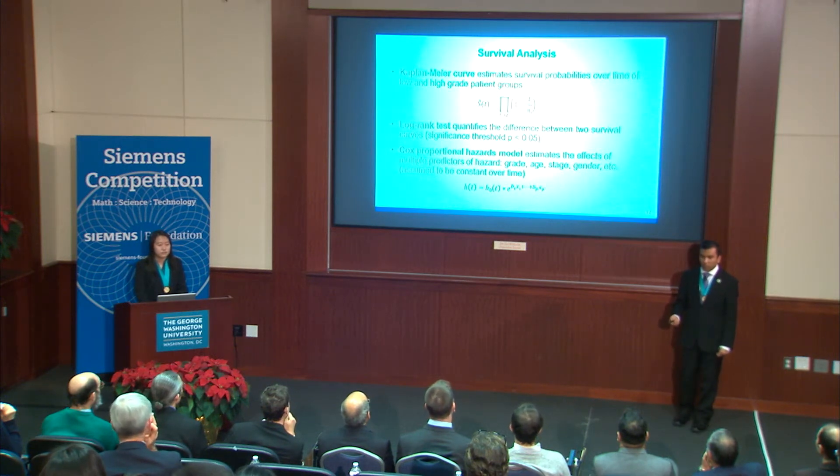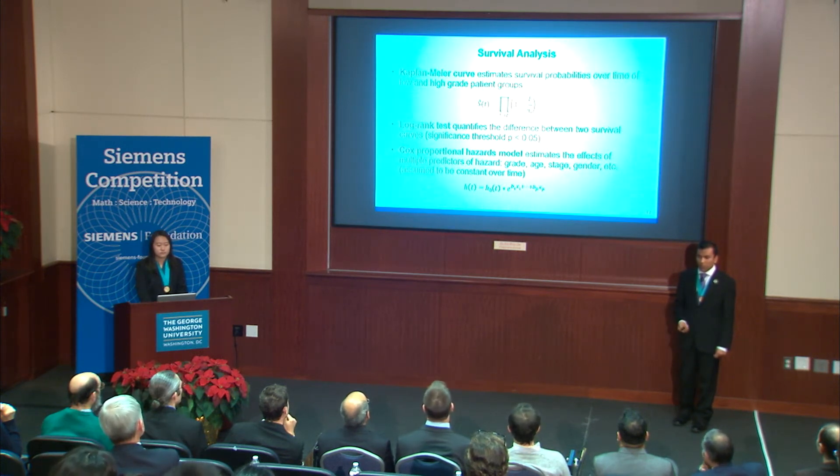We also performed survival analysis on our results to determine how well they correlated with patients' survival chances. We used grade assignments from our lasso algorithm. Kaplan-Meier curves visualize patient survival probabilities as a function over time, and we quantified the difference between the low-grade and high-grade curves using the log rank test, with a standard p-value significance threshold of 0.05. We also used the Cox proportional hazards model, which models the effects of multiple variables on hazard — the instantaneous probability of a patient dying at a specific time given that the patient has already lived up to that time — looking at the hazard ratio for low-grade versus high-grade.